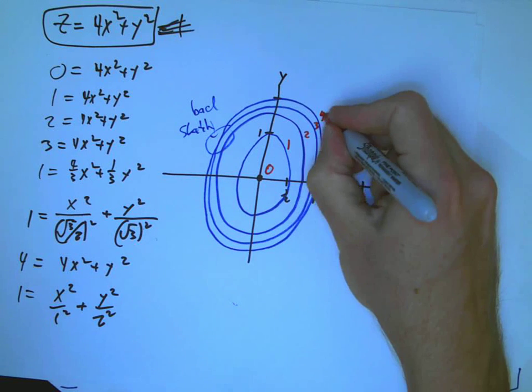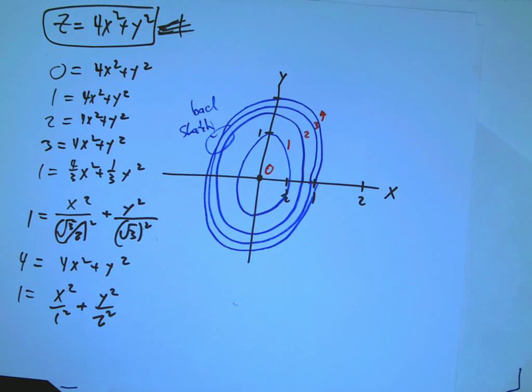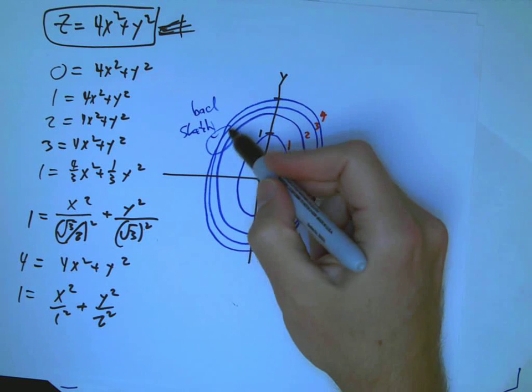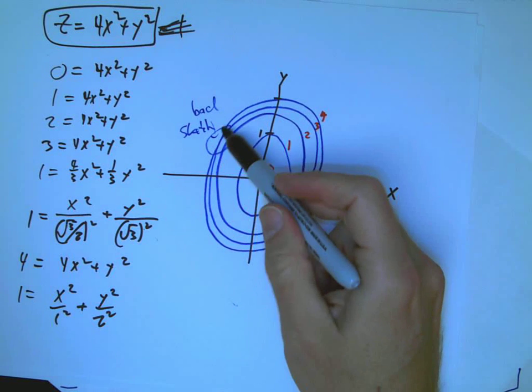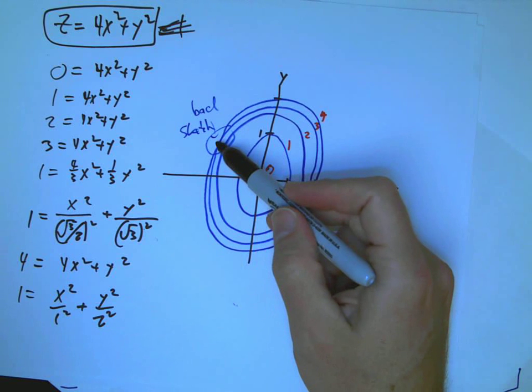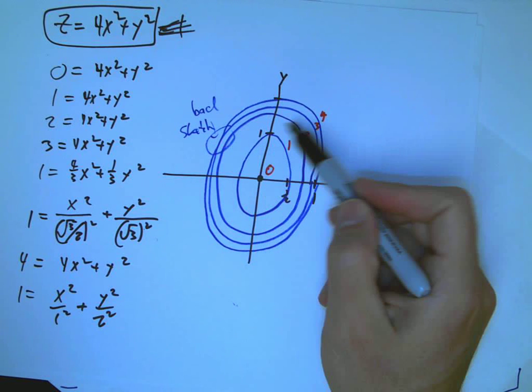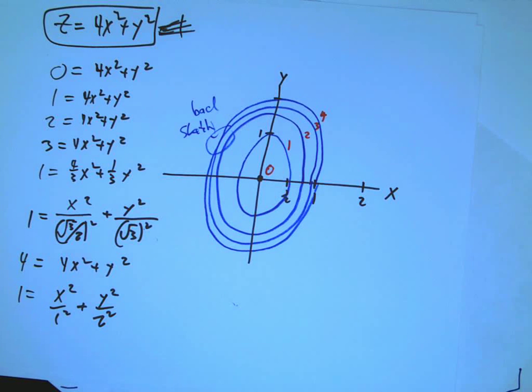One thing that's really important about contour lines is that they never, ever cross. We'll see what will look like an exception to that later on, but it won't really be an exception. Two different contours from different values can't cross. That would mean it wasn't a function. That would mean this one point got assigned the value 3 and the value 4.